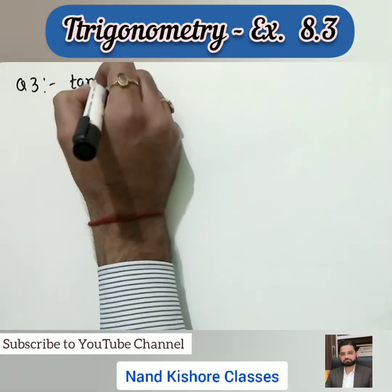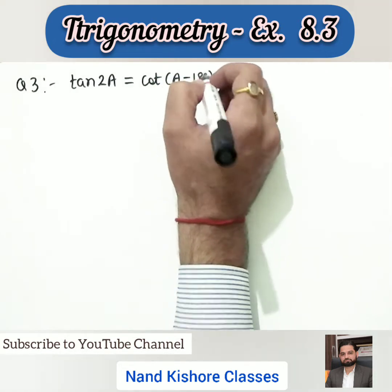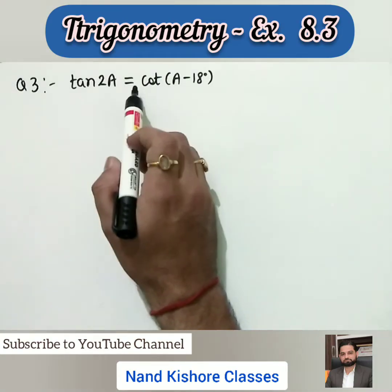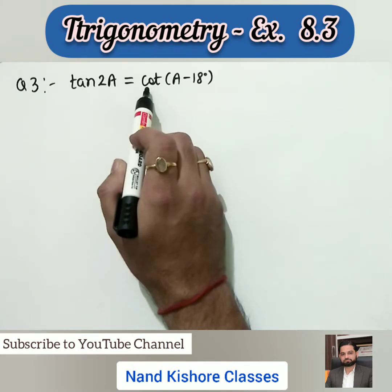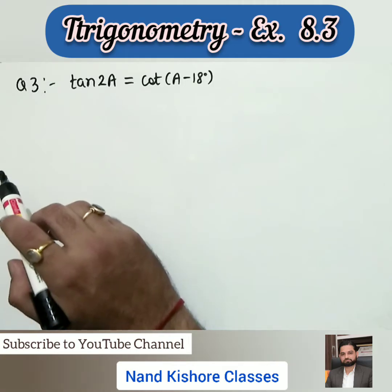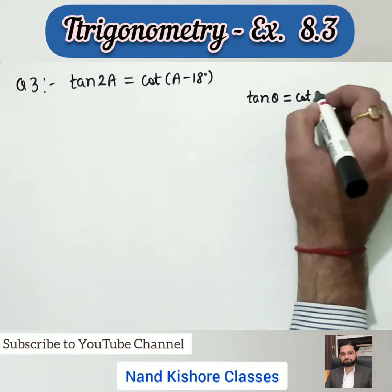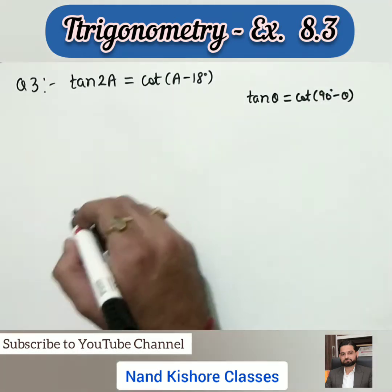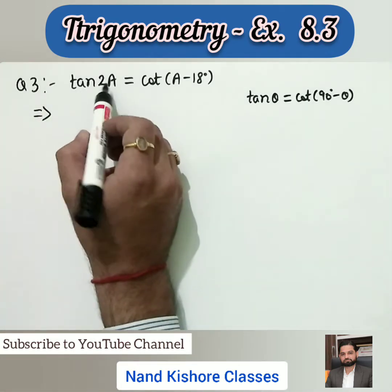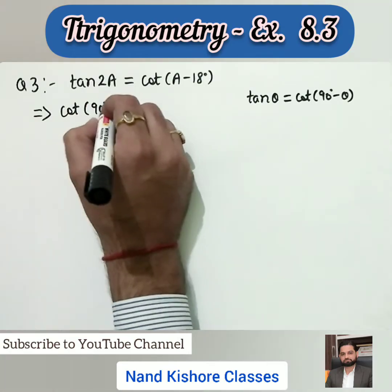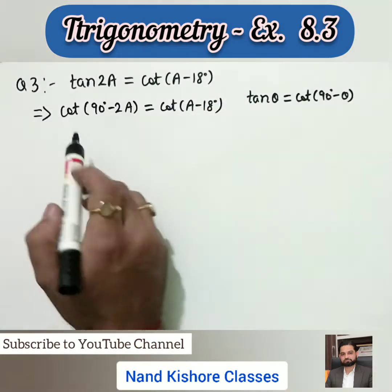Question number three: tan(2a) is given as equal to cot(a - 18°) and we need to find the value of a. In these kinds of questions, the left side has tangent and the right side has cotangent. We want both sides to have the same trigonometric ratio. I am going to use the formula: tan(θ) = cot(90° - θ), which we studied in our previous lecture.